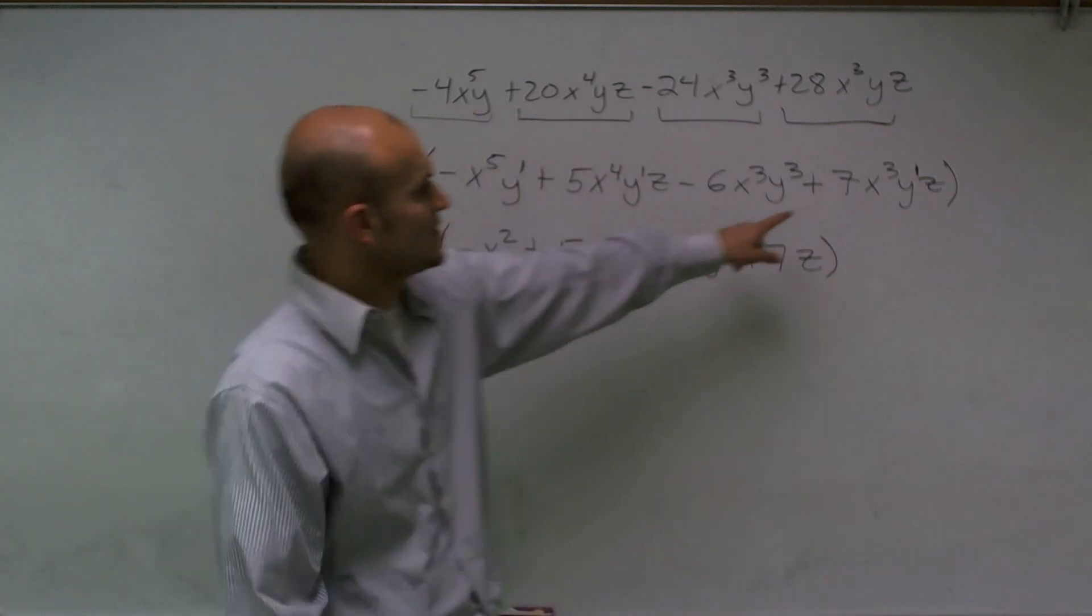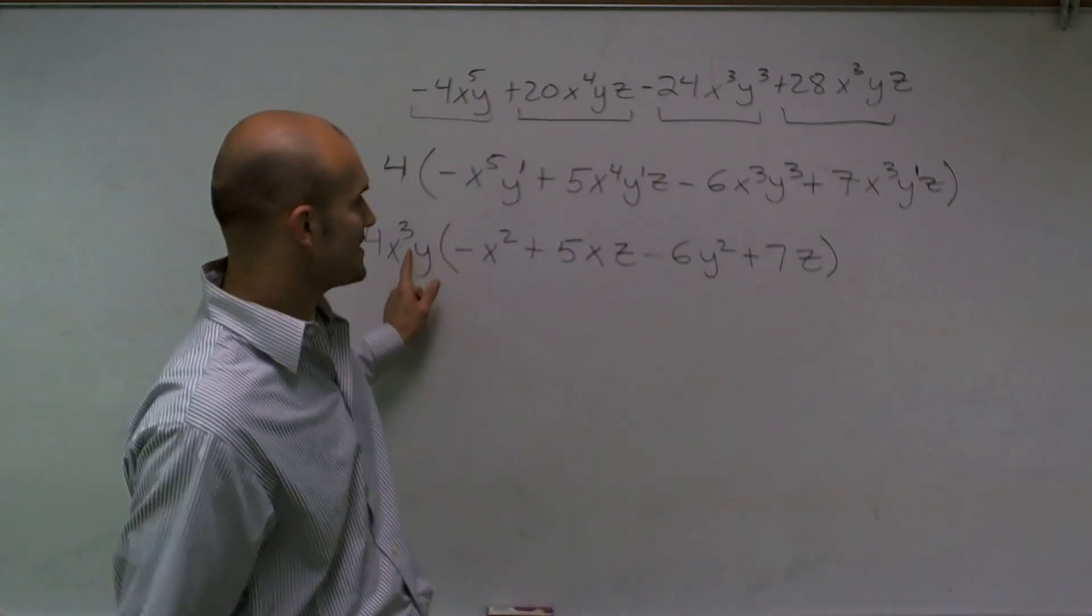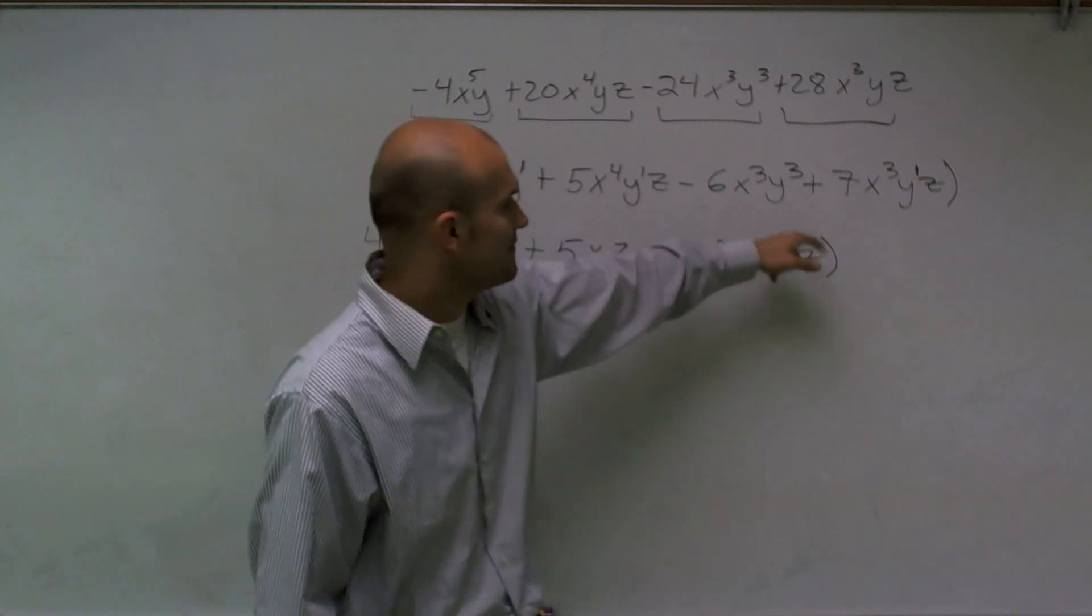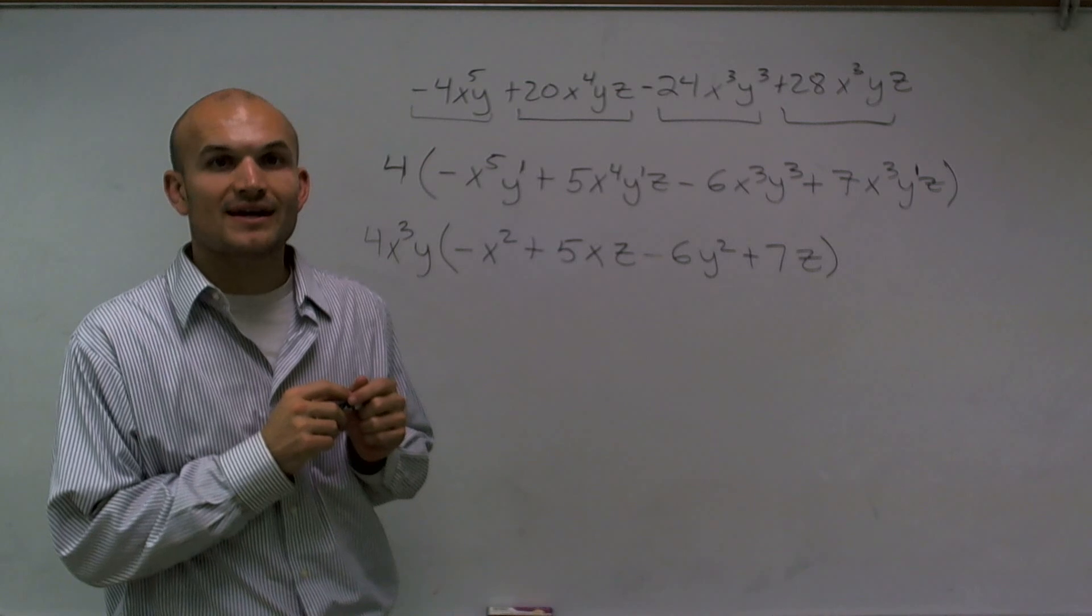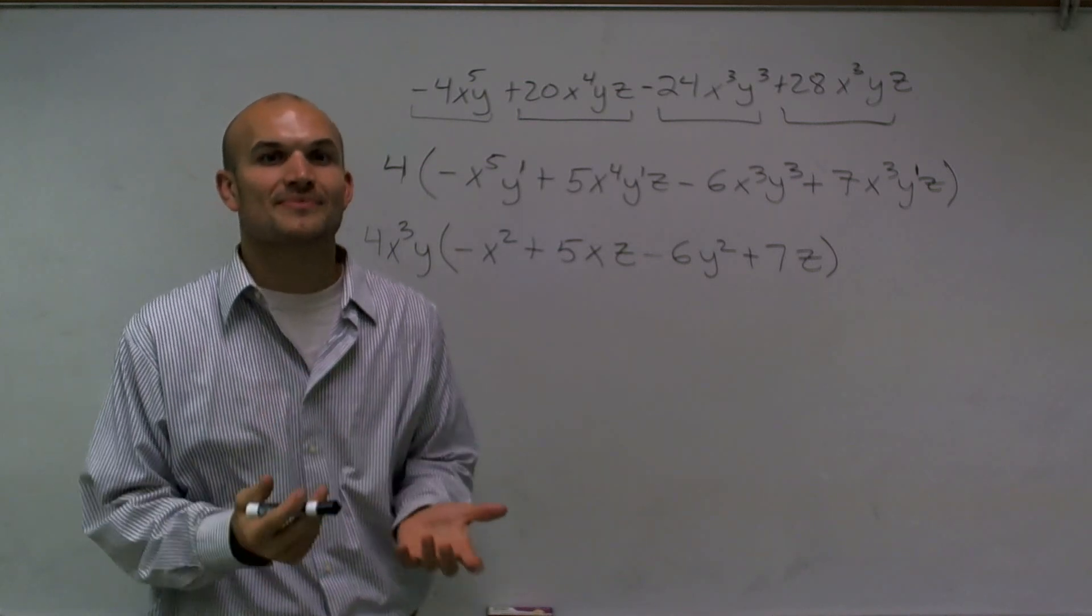As my, when I factor out an x cubed, I get, I factor out an x cubed from there, I get an x cubed. And I factor out a y, I get a y. So that is going to be my final answer by factoring out the greatest common factor. Thanks.